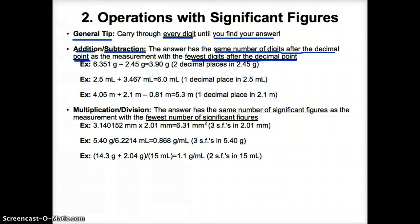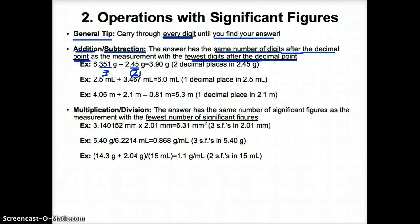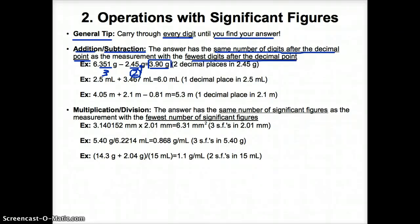So let's try this out. For 6.351, we have three decimal places. For 2.45, we have two decimal places. We first ask ourselves: which measurement has the fewest digits after the decimal point? That's 2.45. Since this has the fewest digits after the decimal point, that number of decimal places is how many must be in your answer. So whatever our answer is, we need to round it down to 3.90 — because the measurement with the fewest decimal places tells us how many decimal places we must also have in our answer.